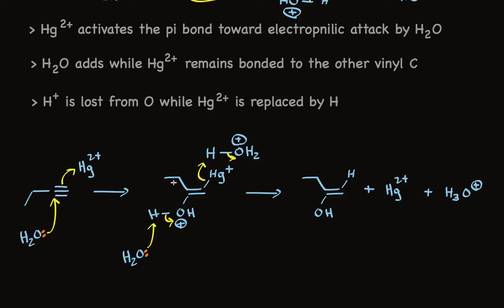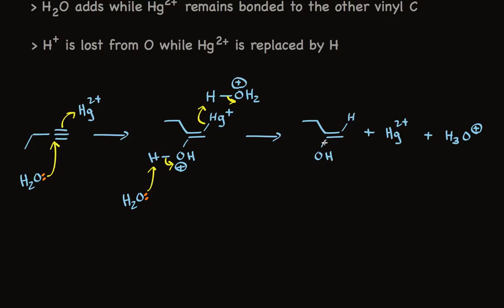This leads to the product I've shown here. The mercuric ion is released. The hydronium ion is released. Both of these ions are simply catalysts in the reaction. The reactions that are consumed are the alkyne and water. The product I've written here is an enol.